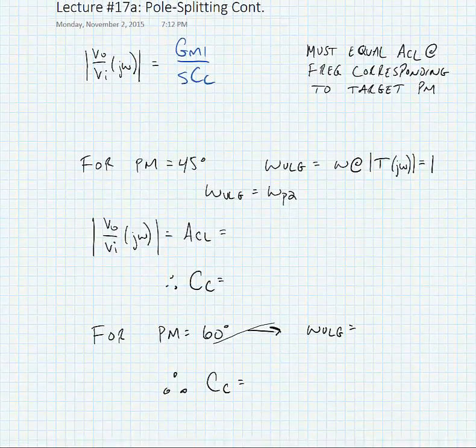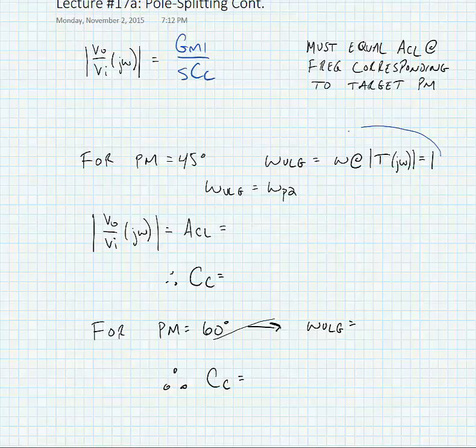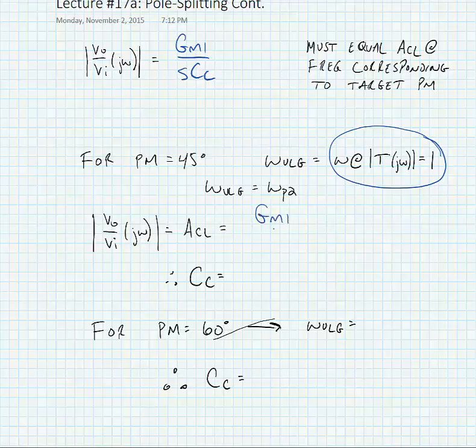This is the frequency where the loop gain magnitude goes to one. We're making our transfer function equal to the closed loop gain and we're setting the frequency equal to omega_p2. So we have gm1 divided by omega_p2 times Cc. This means that our compensation capacitance is equal to gm1 divided by omega_p2 times our chosen closed loop gain.